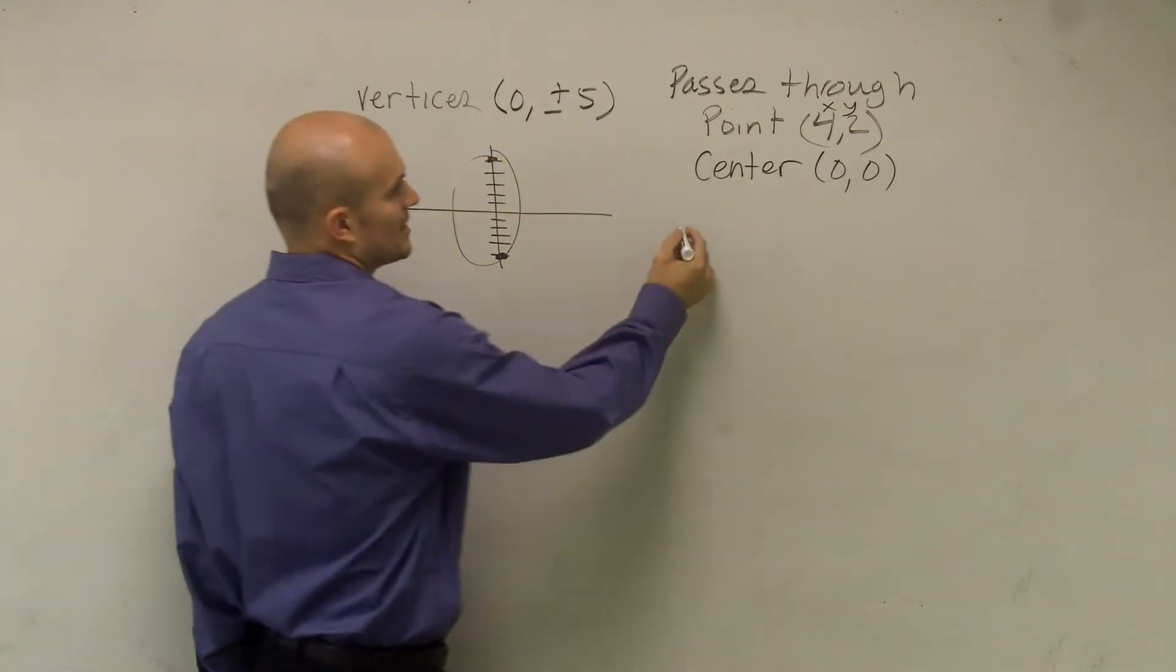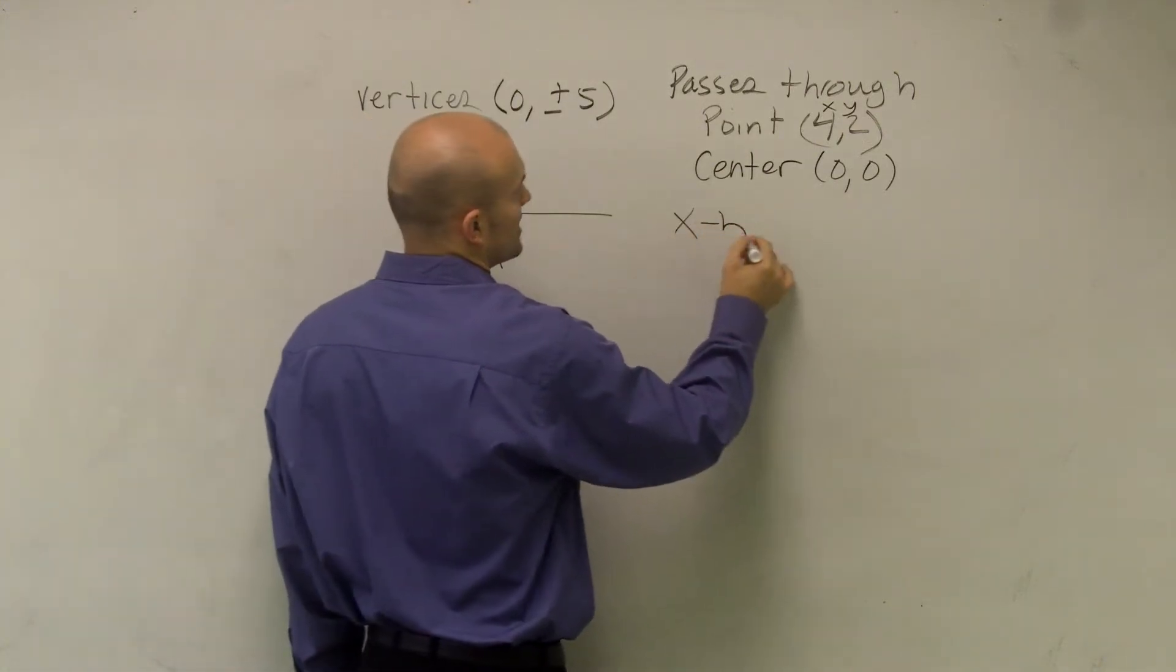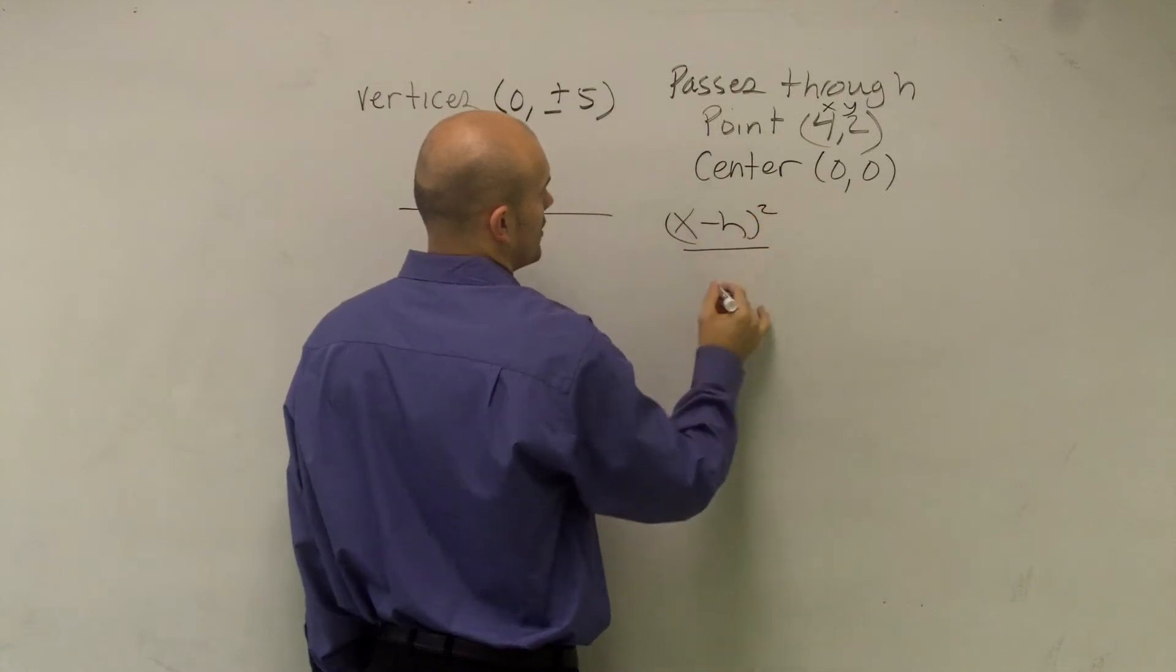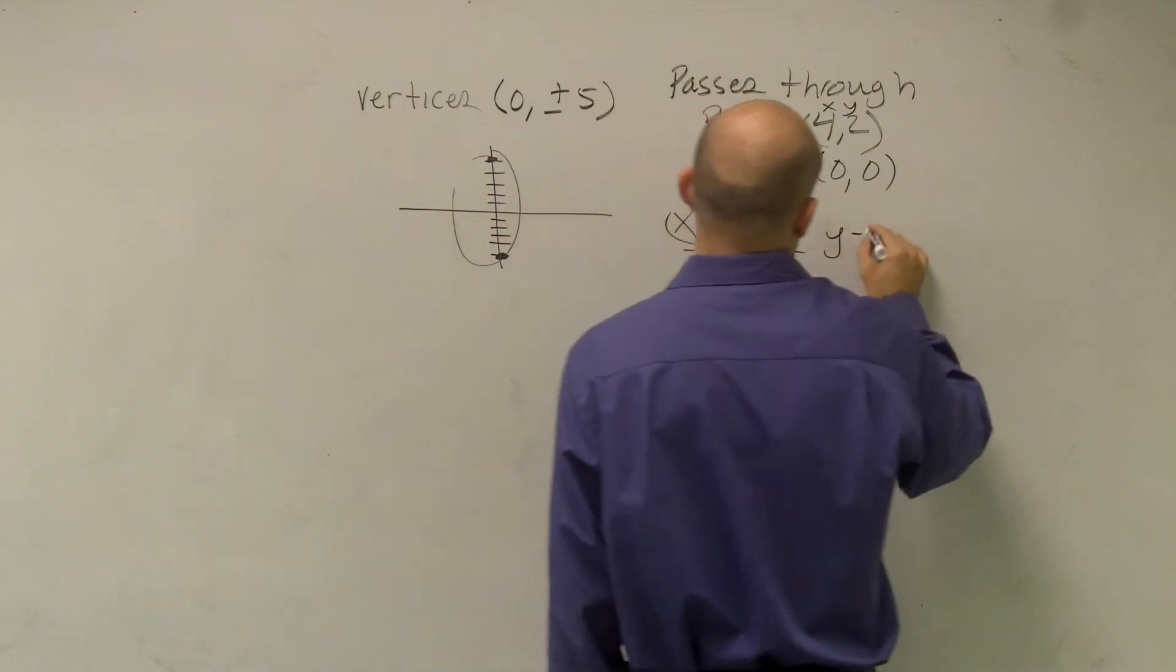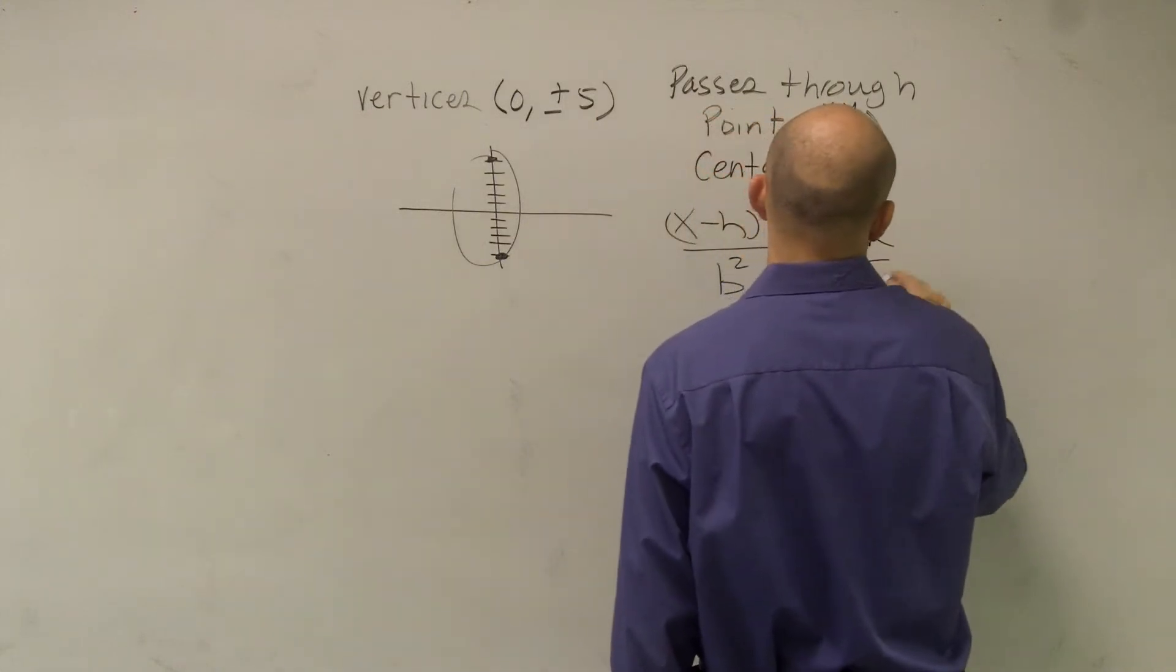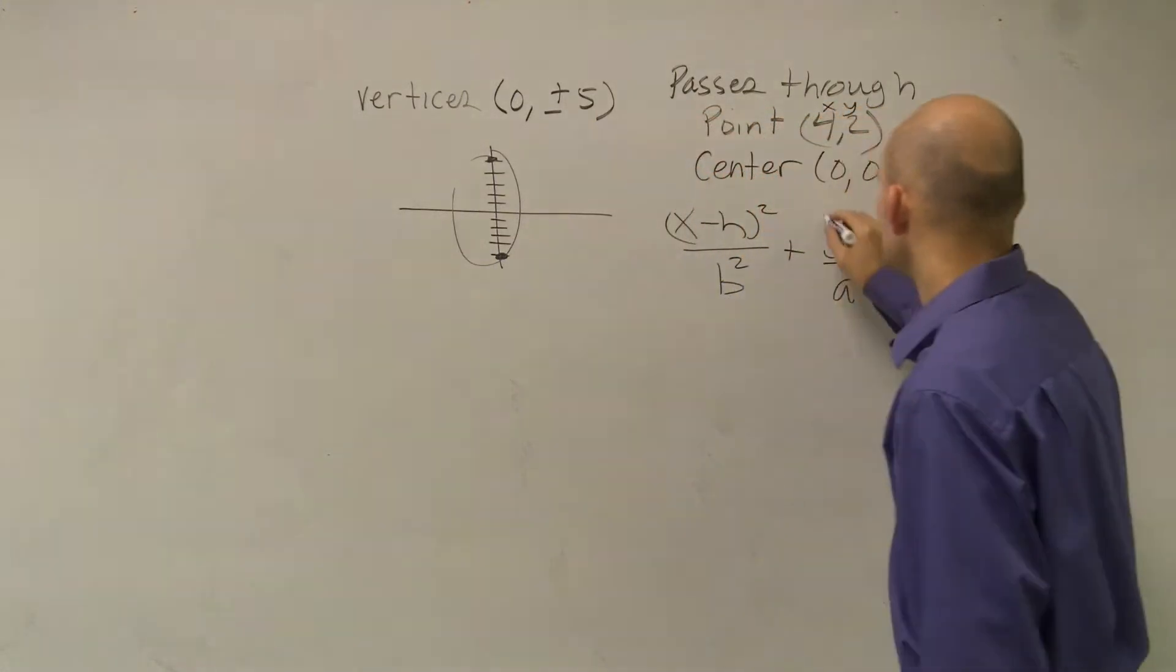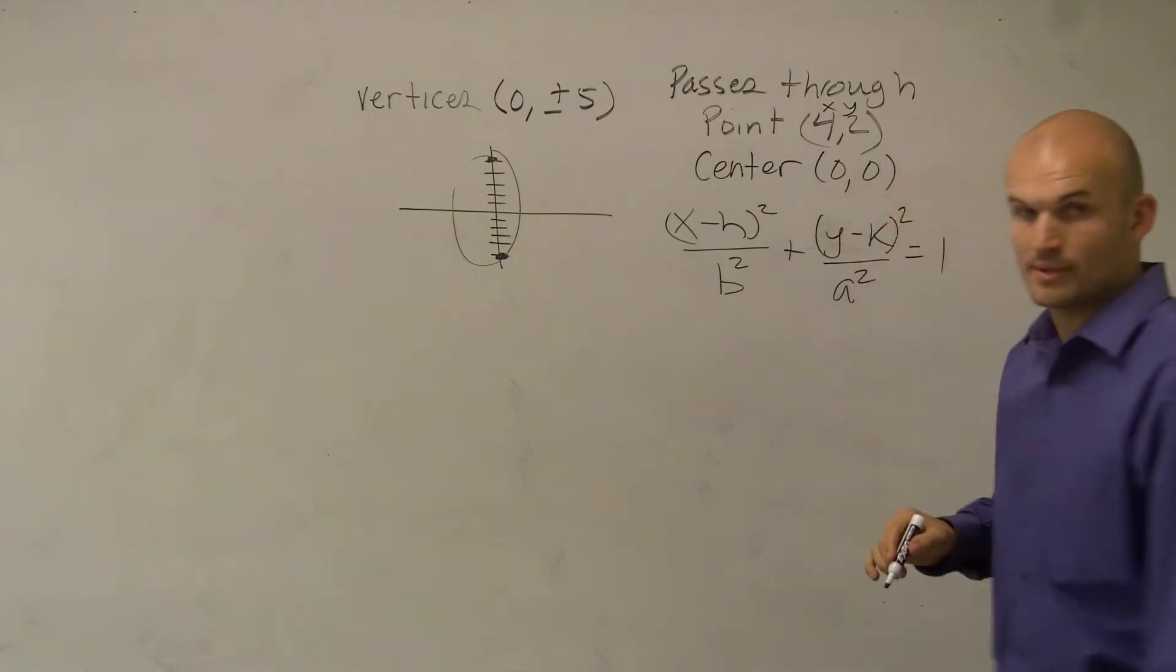That also tells me I'm going to use (X - H)²/B² + (Y - K)²/A² = 1. I'm going to use that formula.